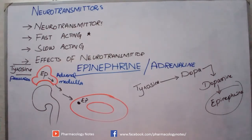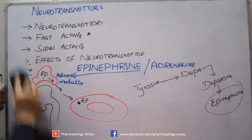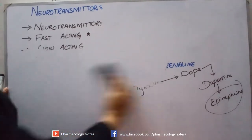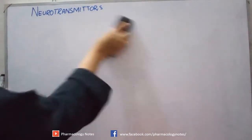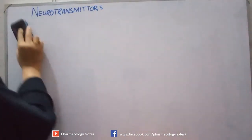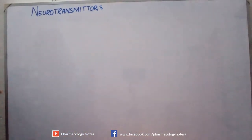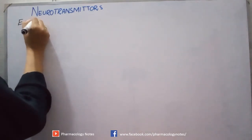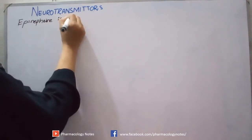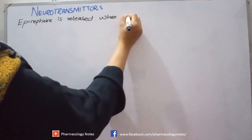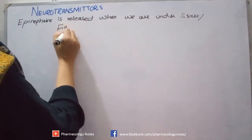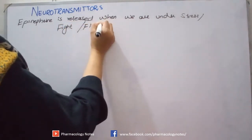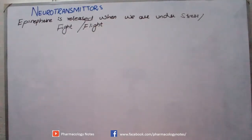As adrenaline is released into the bloodstream and reaches the target cells, we consider what actions it will show. Epinephrine or adrenaline is a neurotransmitter released during the fight-or-flight response, or when we are under stress conditions. When our body needs certain changes — more blood supply or increased activity — epinephrine is released.